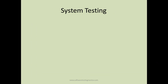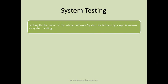Let's understand what system testing is. This is the third test level in any development life cycle. System testing tests the behavior of the whole system as defined by scope. When all modules are integrated into one software with all defined requirements implemented, you start system testing. System testing tests the system as a whole as defined by the requirement specification and your design document.